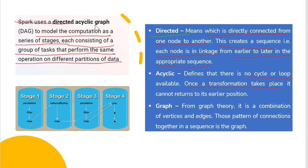Graph, from graph theory, is the combination of vertices and edges. Those patterns of connections together in sequence is called a graph.